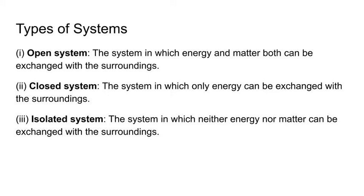Second, closed system: the system in which only energy can be exchanged with the surrounding. Bantantr — aisa tantr jinkhi pari seema se dravye na guzar sake; na toh tantr mein dravye ja sakta hai, aur na hi dravye tantr se bahar aa sakta hai. Aise tantr ko hum bantantr kehte hain. Example: ek dhake hue beaker mein garam jal. Yadi hum ek close beaker mein garam pani lenge, to hum dekhenge heat exchange hoti hai, par dravye ka matter as it is rehta hai — quantity of water remains the same.